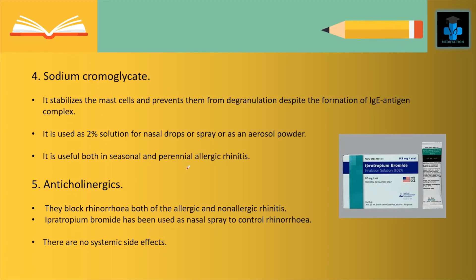Sodium cromoglycate stabilizes the mast cells and prevents them from degranulation despite the formation of IgE-antigen complex. It is used as a 2% solution for nasal drops or spray, or as aerosol powder, and is useful both in seasonal and perennial allergic rhinitis. Anticholinergics block the rhinorrhea of both allergic and non-allergic rhinitis; ipratropium bromide has been used as a nasal spray to control rhinorrhea, with no systemic side effects.